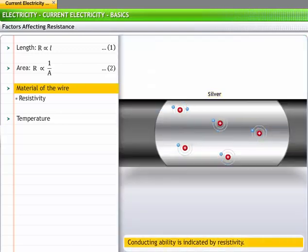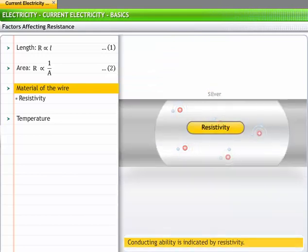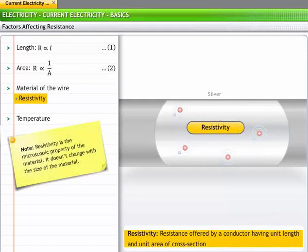The conducting ability of a material is often indicated by its resistivity. Resistivity of a material is the resistance offered by a conductor having unit length and unit area of cross-section. The resistivity of a material depends upon its electronic structure and its temperature.